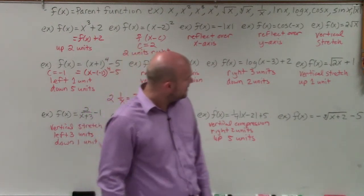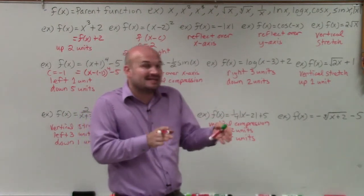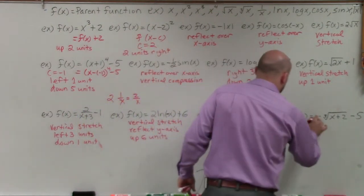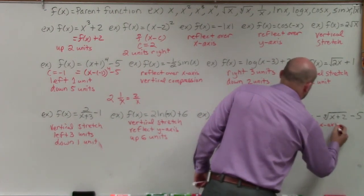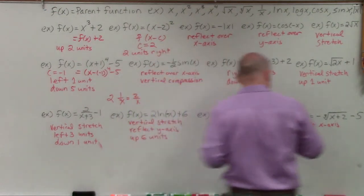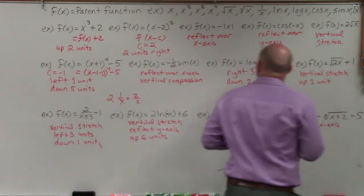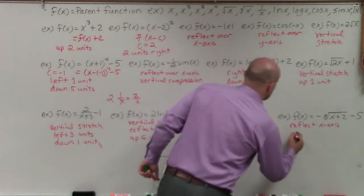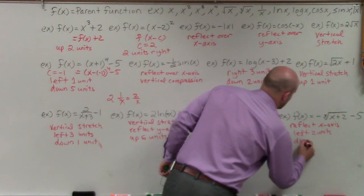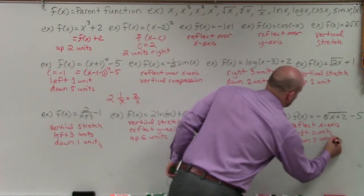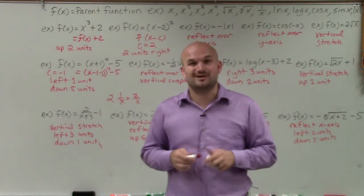The last one is a cube root. The cube root is being multiplied by a negative on the outside, inside I'm adding 2, and then I'm subtracting 5. Multiplying by negative outside means reflect over the x-axis. That's left 2 units and down 5 units. And there you go — that is how you apply transformations to a different set of parent functions.